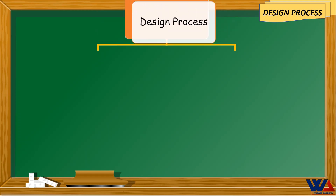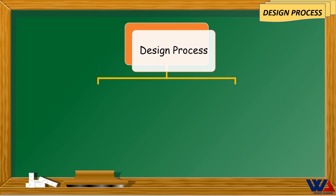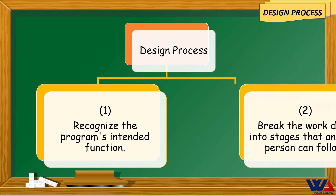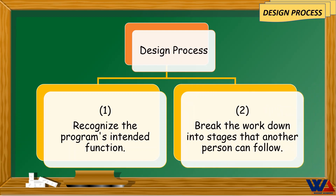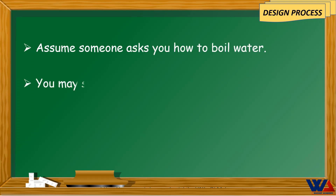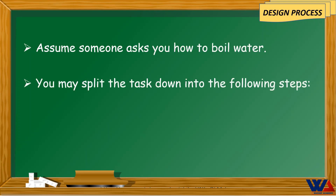The design of any program may be divided into two steps: first, recognize the program's intended function; and second, break the work down into stages that another person can follow. For example, assume someone asks you how to boil water — you may split the task down into the following steps.